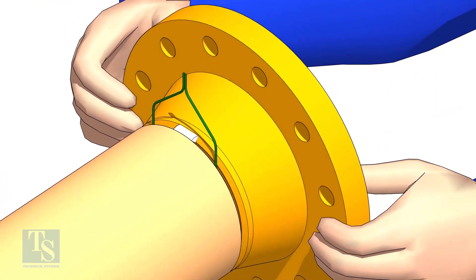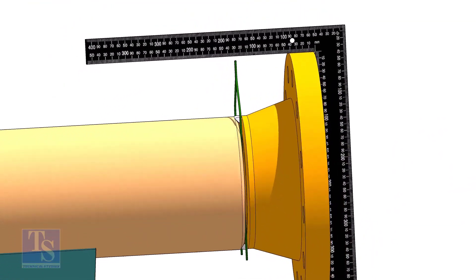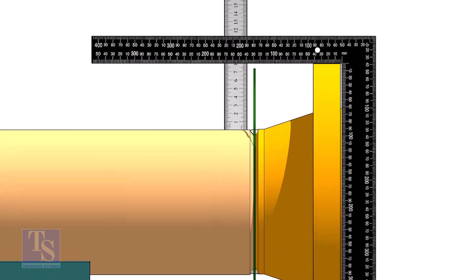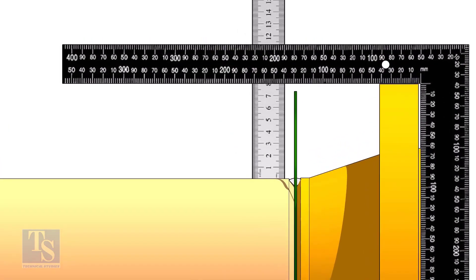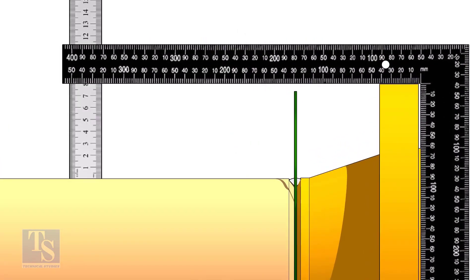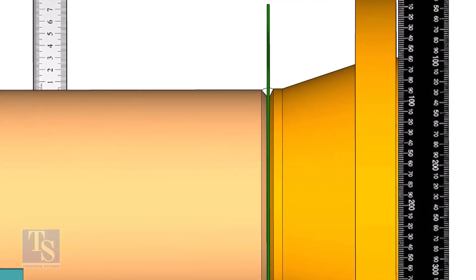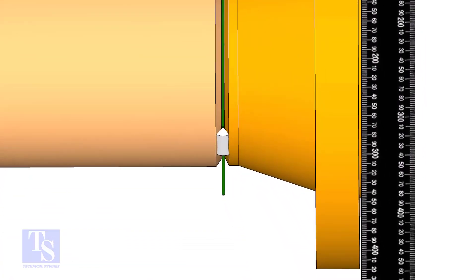Hold the flange with a gap rod in the joint, tack weld on top side of the joint. Check the squareness of flange face to the pipe as shown. Tack weld at the bottom side of the joint.